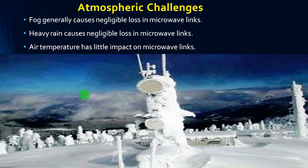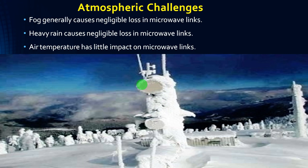Atmospheric challenges: fog generally causes negligible loss in microwave links, and heavy rain also causes negligible loss in microwave links. Air temperature has little impact on the links. This is an example picture of atmosphere challenges and risk — the complete site is occupied by snow, which greatly impacts the microwave link.